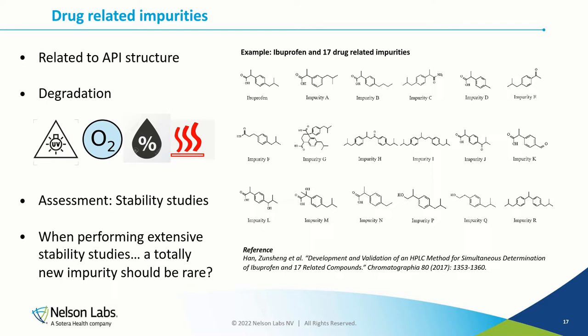During drug development, companies perform theoretical modeling of the possible impurities that can be formed, but also stability studies — an experimental assessment where the drug product is stored at real-use or accelerated storage conditions and where impurity levels are monitored. On the right-hand side of the slide, you see an example of ibuprofen, a well-known anti-inflammatory drug, with 17 of its known drug-related impurities.